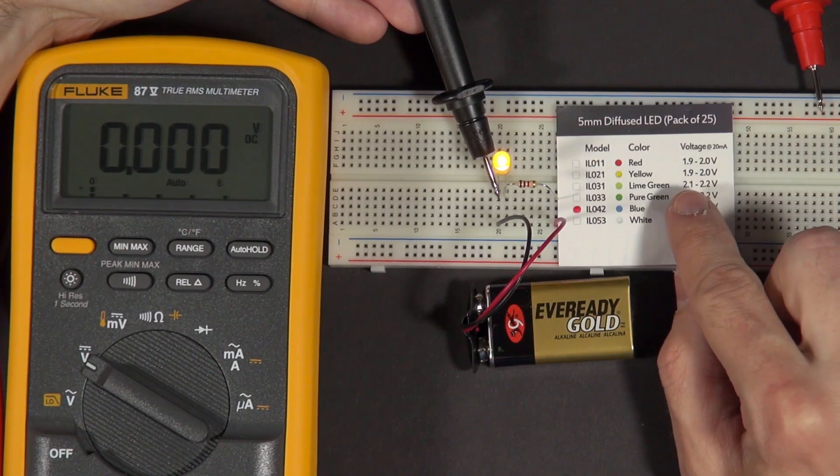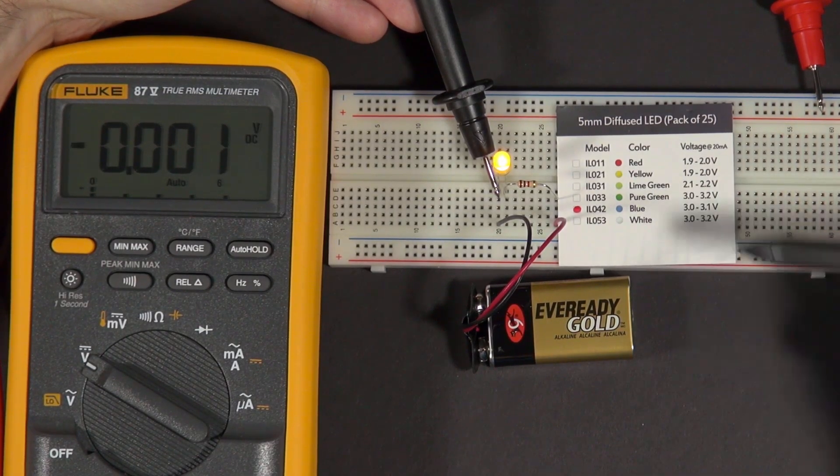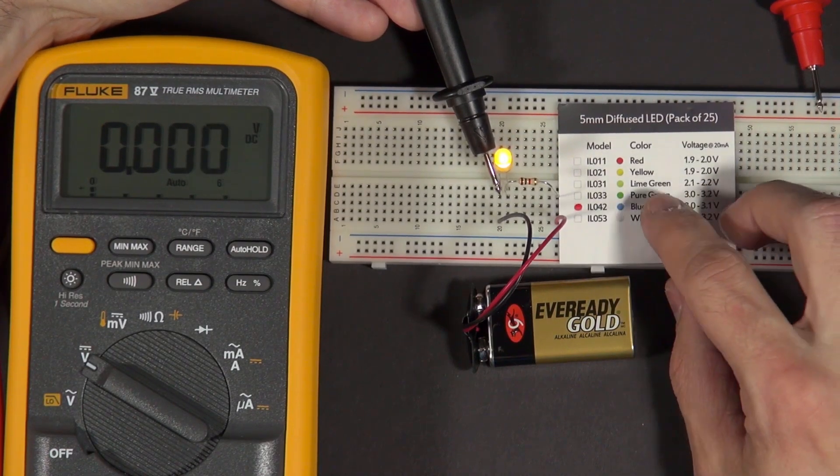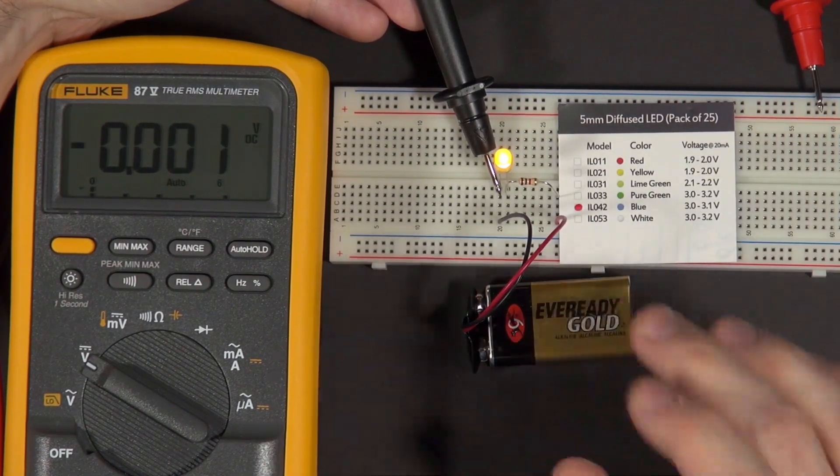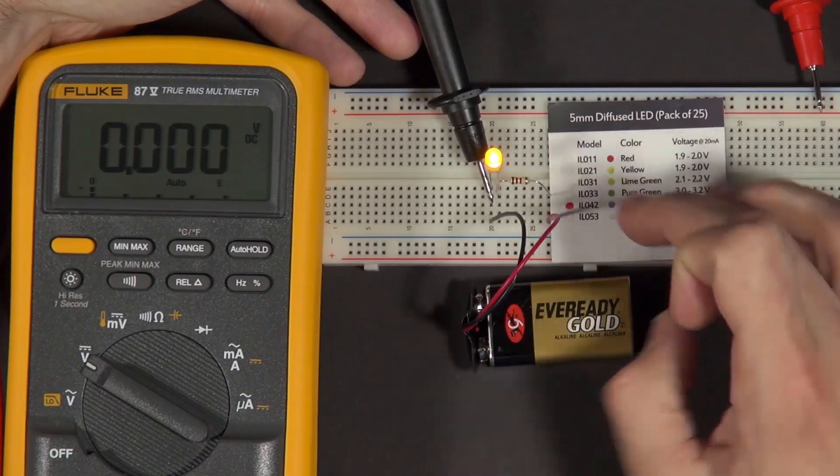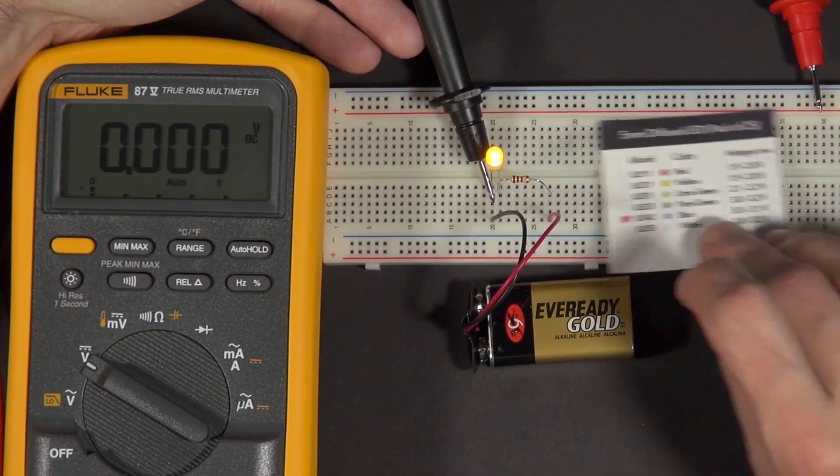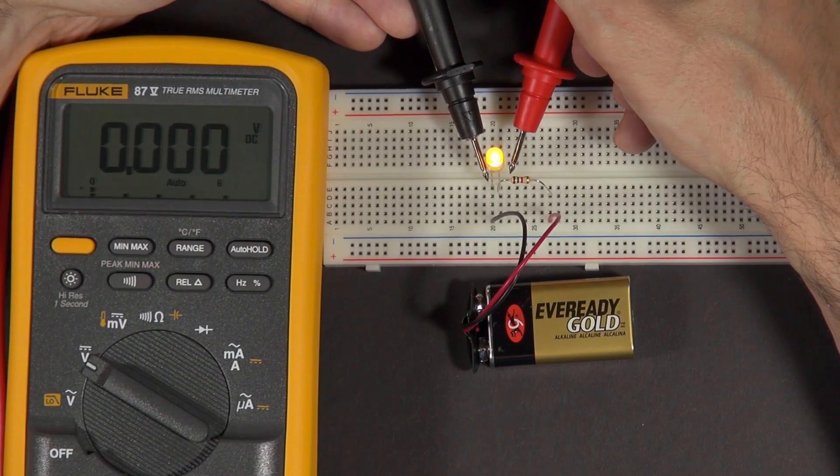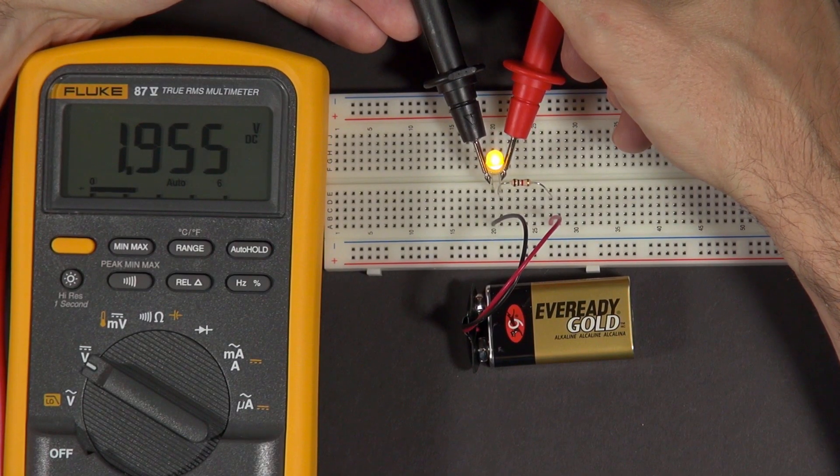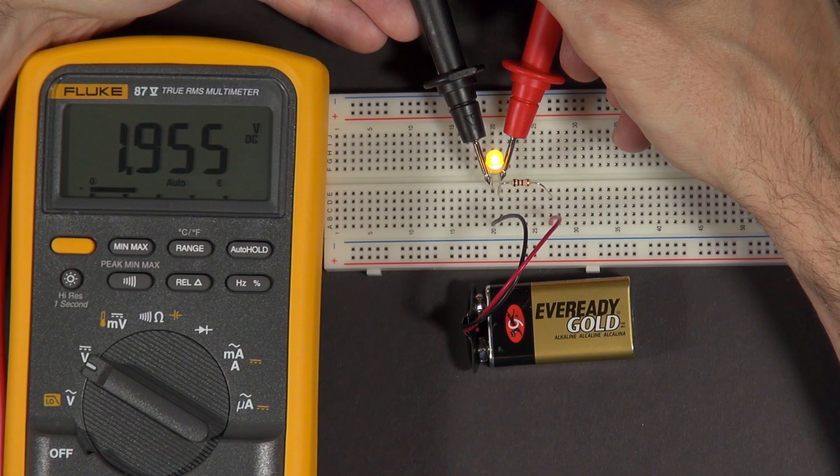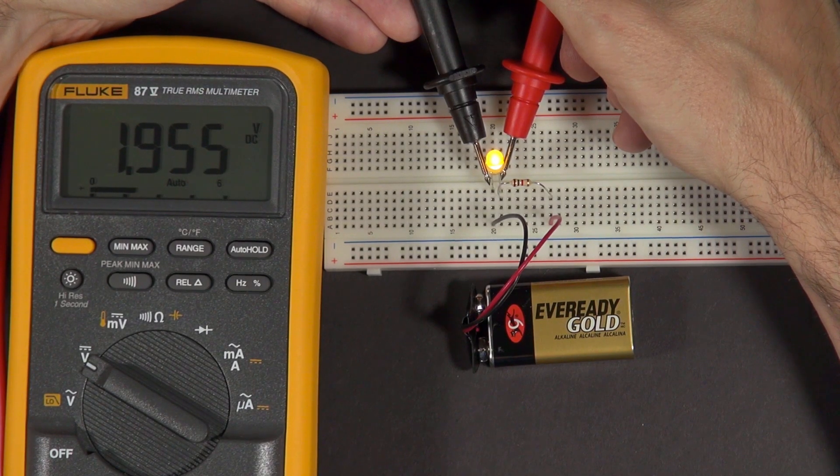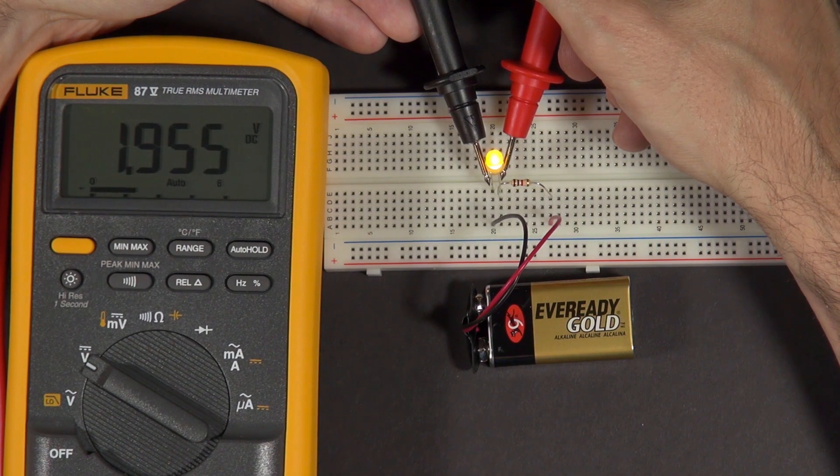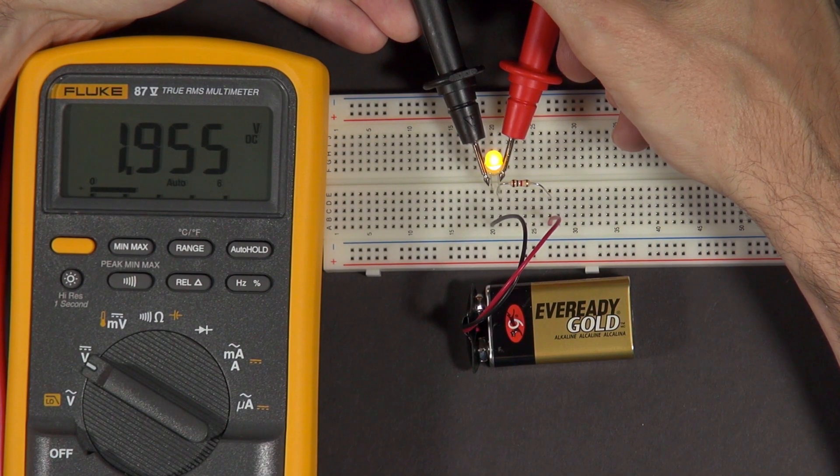Now the resistor is supposedly dropping some voltage so that the LED operates with the appropriate voltage. If we look at what the manufacturer says, the manufacturer said that this LED should have between 1.9 and 2 volts. It seems to be operating fine, so hopefully that's the voltage it's getting. If I look at the voltage across this LED, I see 1.95 volts, which is right in that range from 1.9 to 2 volts, which is perfect and explains why the LED is working just fine.